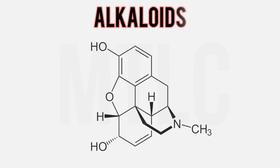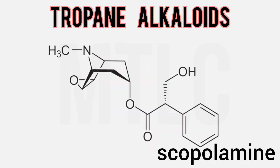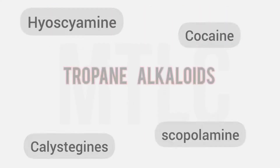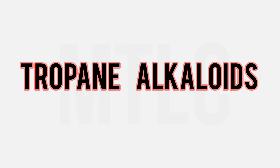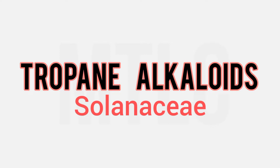This is called Alkaloids — nitrogen-containing compounds. There are heterocyclics. Tropane alkaloids are mostly from the Solanaceae family. This is a chemotaxonomic marker. All tropane alkaloids are almost exclusively from the Solanaceae family. Tropane alkaloid is a chemical feature and a chemotaxonomic marker.